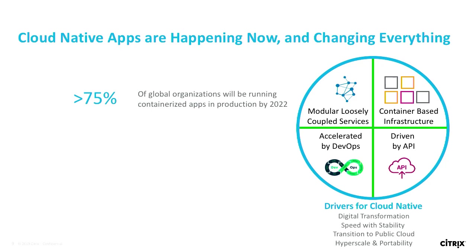So it's microservices — loosely coupled services — in a container-based platform. Typically it's Kubernetes because that's become the default platform. Kubernetes is an open source project open-sourced by Google and adopted by many companies, including Red Hat and IBM. These companies have adopted DevOps practices for automated deployment into production, and they use APIs — inside the app infrastructure and outside to access the apps.